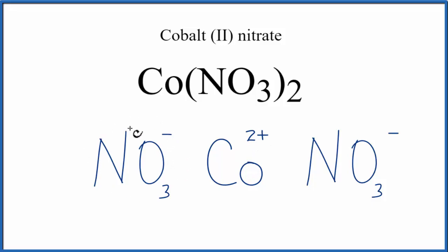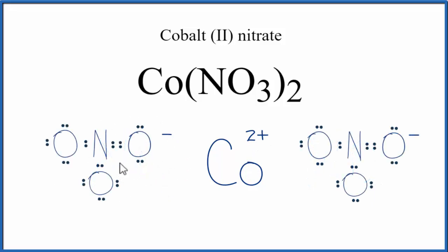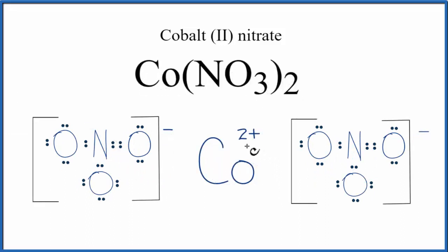Let's replace these nitrate ions with Lewis structures, and then we'll put brackets around each of the nitrate ions. You'll also sometimes see brackets around the metal cation here in the center. So that makes this the Lewis structure for cobalt-2 nitrate.